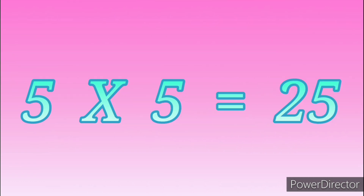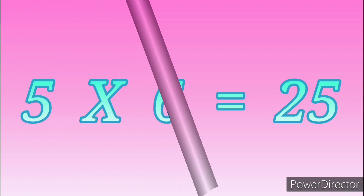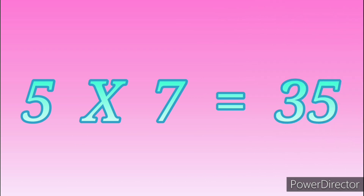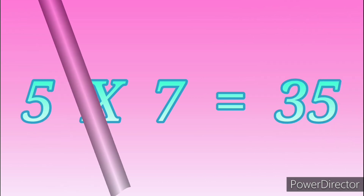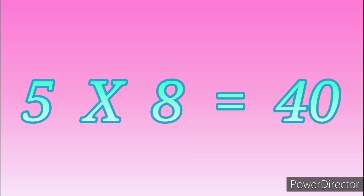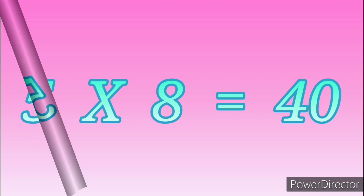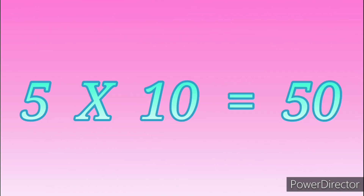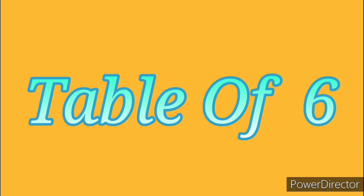5 fives are 25. 5 sixes are 30. 5 sevens are 35. 5 eights are 40. 5 nines are 45. 5 tens are 50. Table of 6.